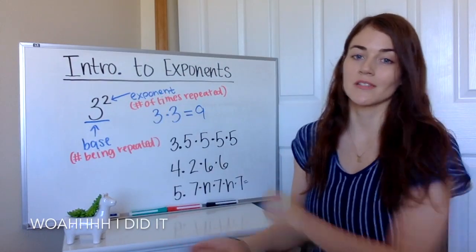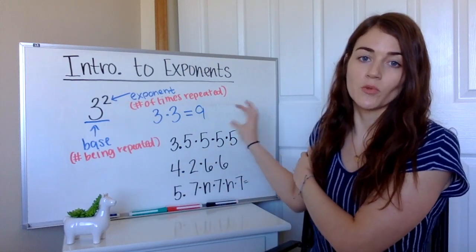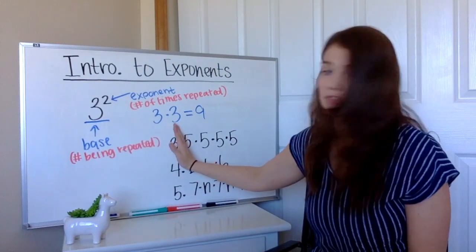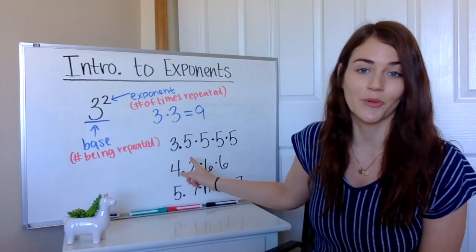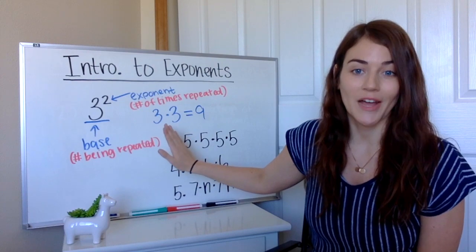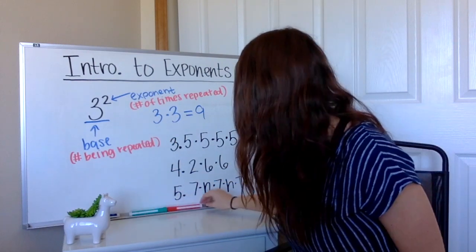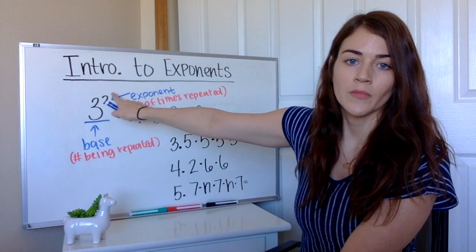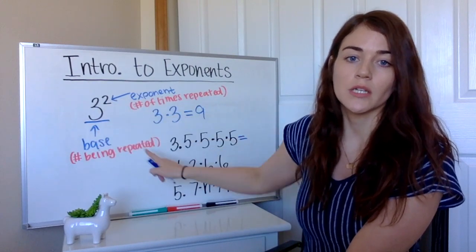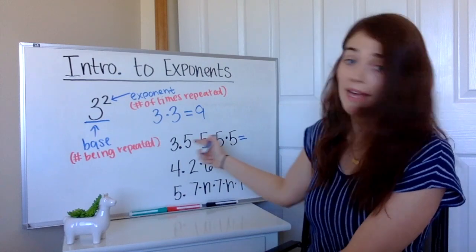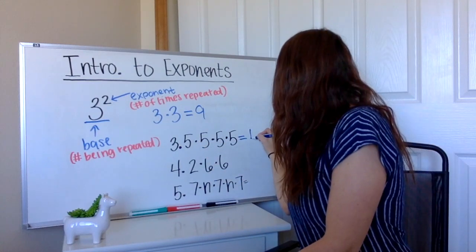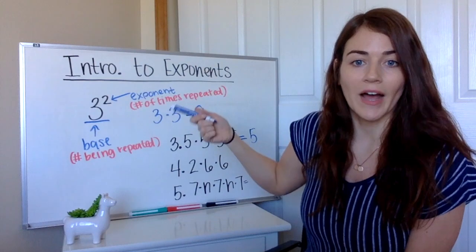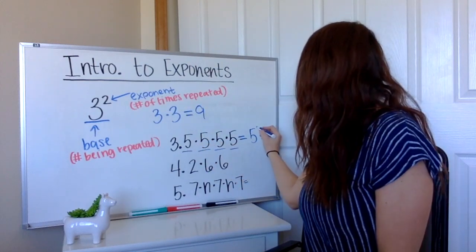Now let's try problems where we're given the expanded version and have to put it into exponential form. This first one: five times five times five times five. We want to write this in exponential form, so we need to figure out what the two numbers are. First, what is our base — what number is being repeated? We have five being multiplied over and over, so five is our base. Then our exponent is the number of times we multiply that five: one, two, three, four — five to the fourth.